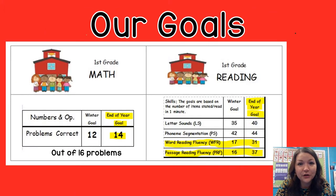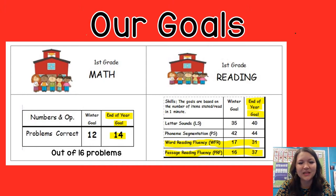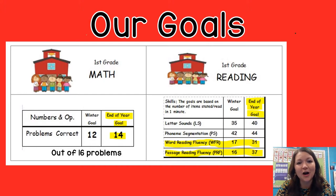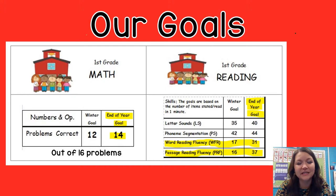Here are our goals for your children if they end up in a tier with us, with the interventionist. For first grade math, the end of the year goal is for them to get 14 problems correct out of 16 problems on our progress monitoring. We progress monitor every two weeks using EZCBM, monitoring numbers and operations, with a goal of 14 out of 16 problems correct.